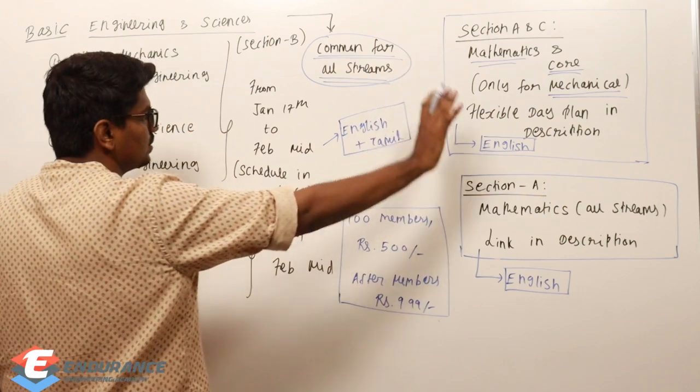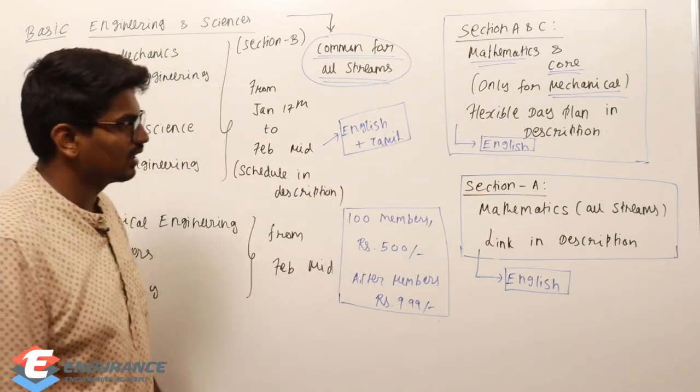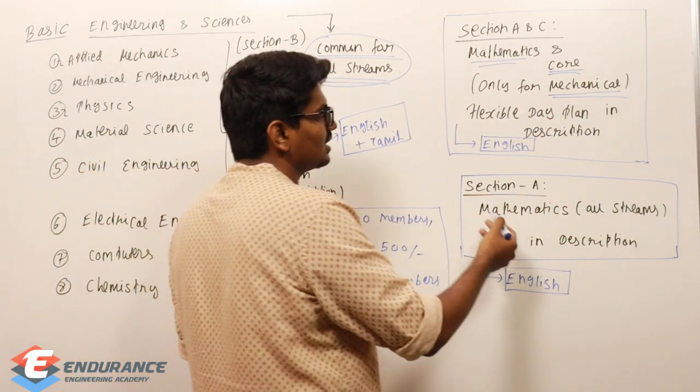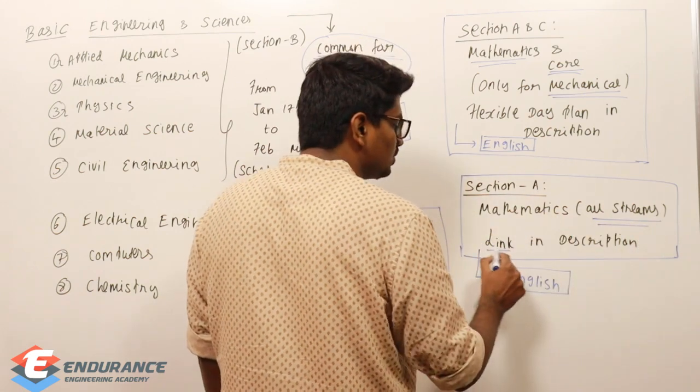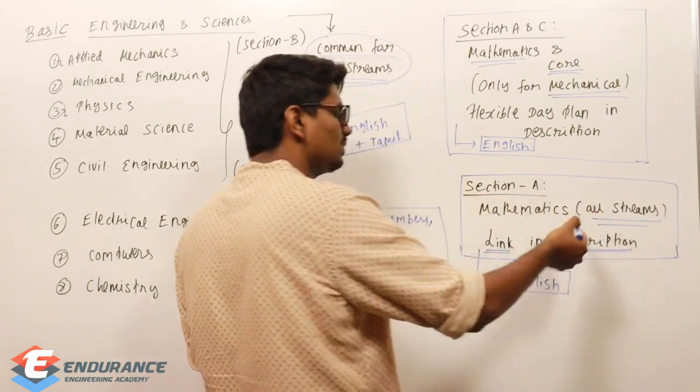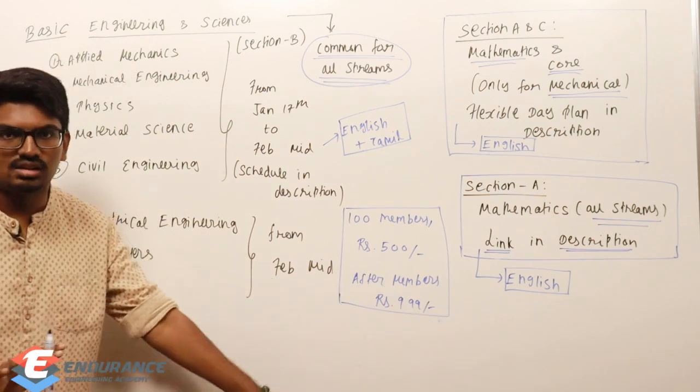Section B course is common for all streams. There is no doubt about it. Section B is common. Similarly Section A is common for all streams, Mathematics. The course order link is in the description. You can check out. And the course is complete English.